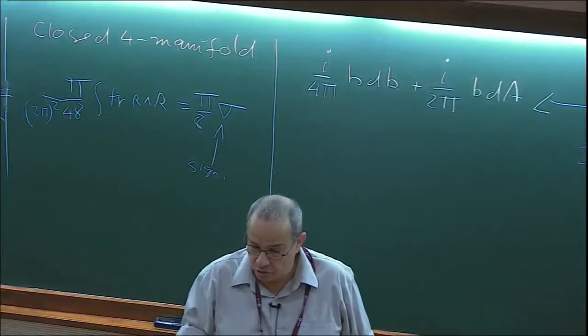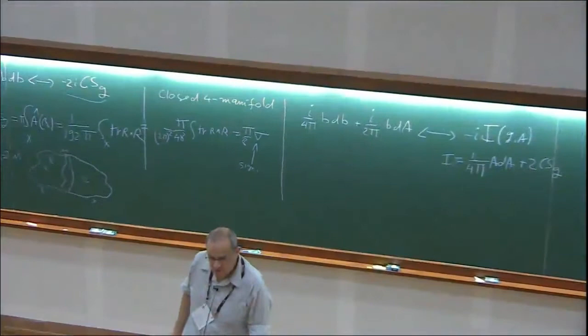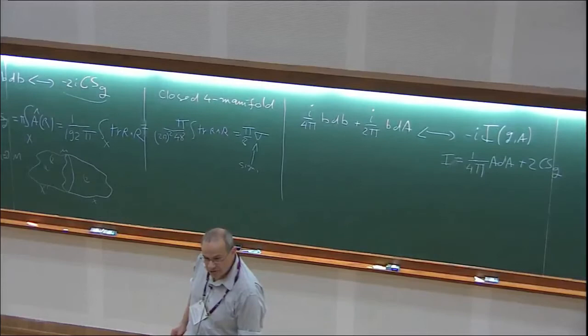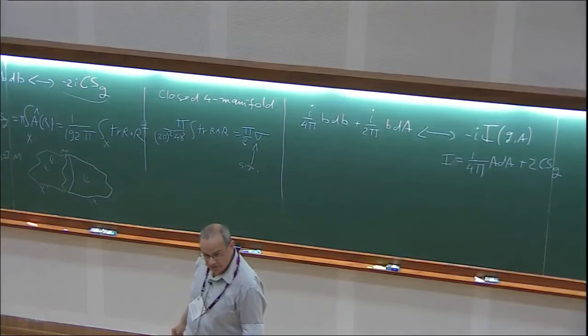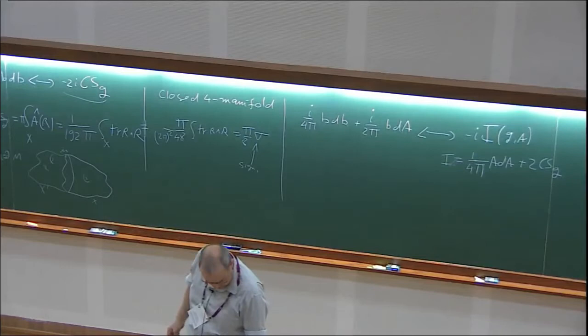We'll see later today that whenever we have this U1 level 1, we can always throw it away and replace it by some classical fields — the theory is essentially classical. The second example I want to study is slightly more interesting in the sense that it's completely trivial. The theory I'm going to study is i over 2π BdC. We have a U1 times U1 theory with 1 over 2π.